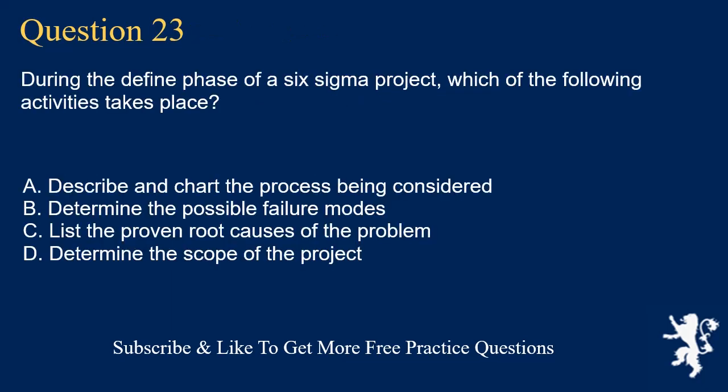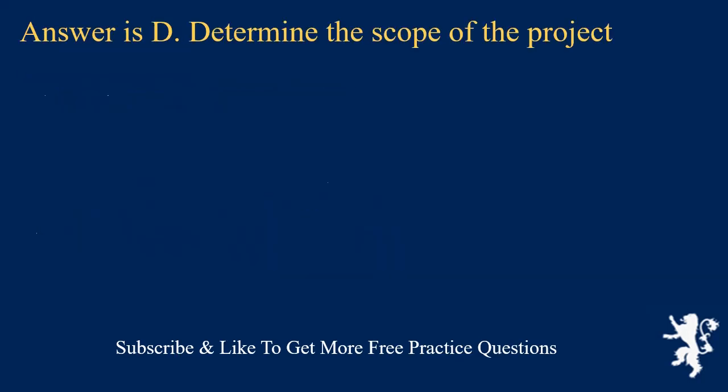Question 23. During the define phase of a Six Sigma project, which of the following activities takes place? A. Describe and chart the process being considered. B. Determine the possible failure modes. C. List the proven root causes of the problem. D. Determine the scope of the project. Answer is D. Determine the scope of the project.